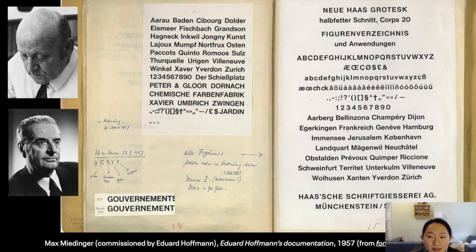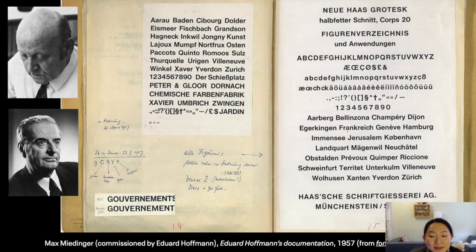1957 is a big year for Swiss typefaces because Helvetica is also born. It was originally named Neue Haas Grotesk, and only three years after it was released under that name, Linotype licensed it, renamed it Helvetica, and marketed it very heavily to the public.